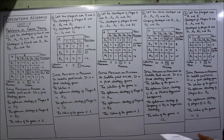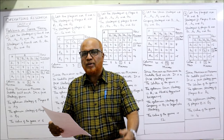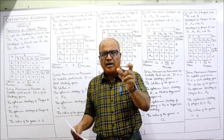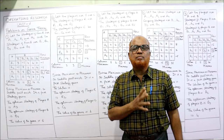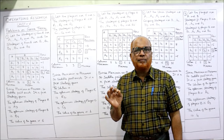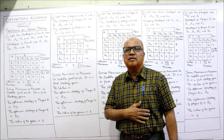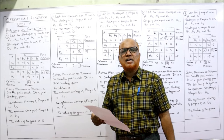Now the first problem: for the following payoff matrix for firm A, determine the optimal strategy for both firms and the value of the game using the maximin and minimax principle. Maximin means the maximum among the minimums, and minimax means the minimum among the maximums. Have a calculator and notebook ready. Here two players are firm A and firm B — firm A is in rows and firm B is in columns.